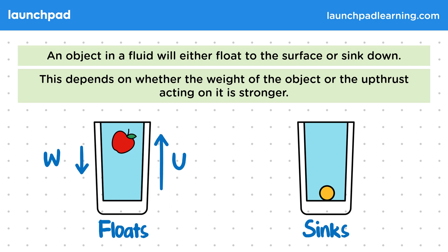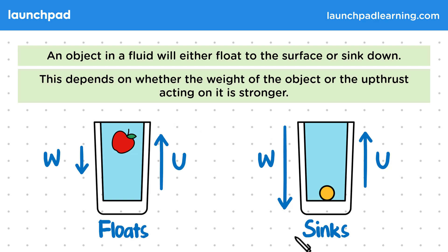But for the coin, it has a larger weight force, so that this is now stronger than the upthrust force. This means the coin accelerates downwards, eventually landing at the bottom of the glass.